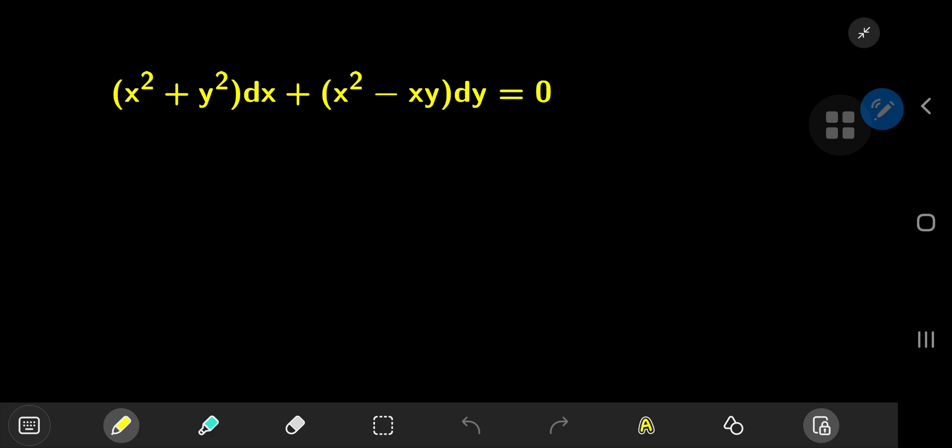And what we want to do here is turn this into a more palatable form. And for that, I should write this as x squared plus y squared plus x squared minus xy all times dy by dx being equal to zero.